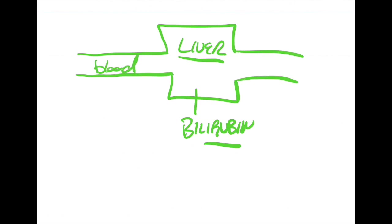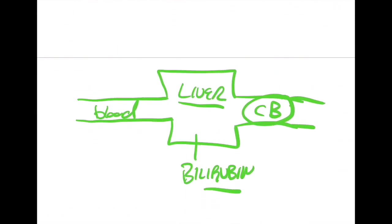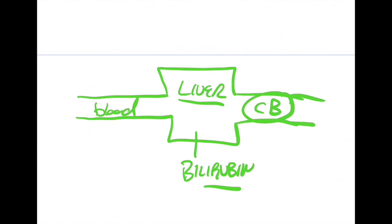The liver conjugates the bilirubin and then we have conjugated bilirubin. And when we say conjugated we're just saying that the liver is modifying the bilirubin so that the body is able to get rid of it in a safe way.